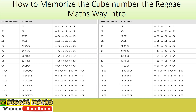Cube is when you times a number by itself three times. Cube is when you times a number by itself three times.